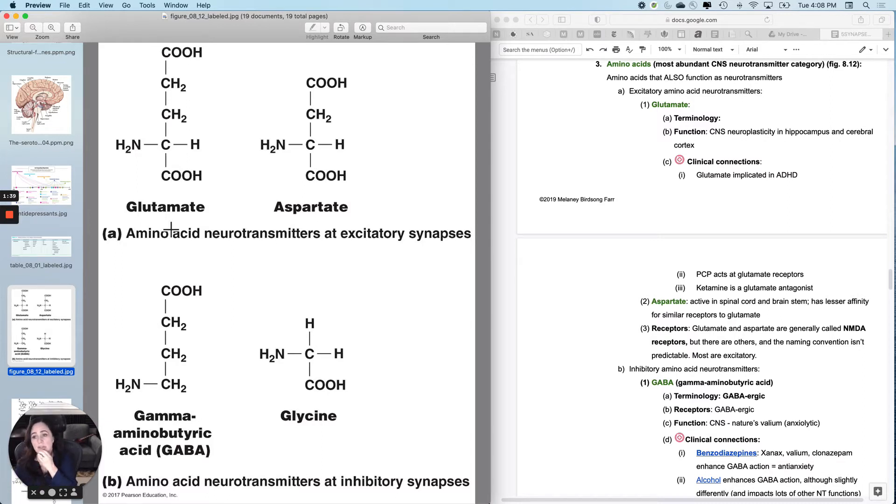Clinical connections with glutamate: Now we don't know everything about ADHD and it seems to involve like four or five different neurotransmitters, but we do know that glutamate is implicated at least in part in ADHD because you can help treat it with some things that manipulate glutamate levels.